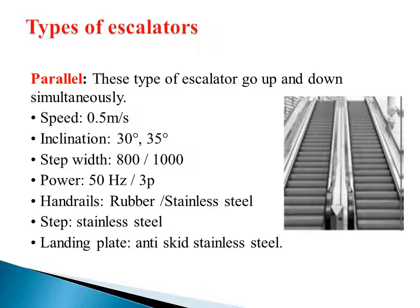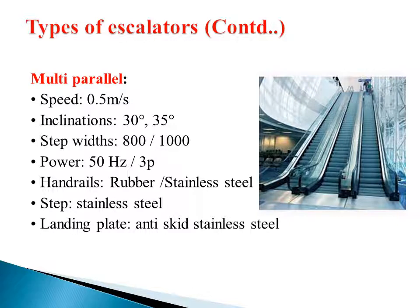There are three types of escalators. The first is the parallel type, where escalators go up and down simultaneously. Speed is 0.5 meters per second, inclination 30–35 degrees, handrails made of rubber or stainless steel, steps made of stainless steel, and landing plate with anti-skid stainless steel. Next is the multi-parallel type, with the same speed of 0.5 meters per second, inclination 30–35 degrees, handrails of rubber or stainless steel, steps and landing plate of anti-skid stainless steel.